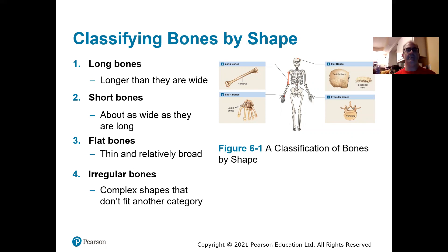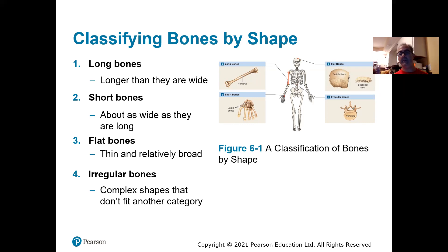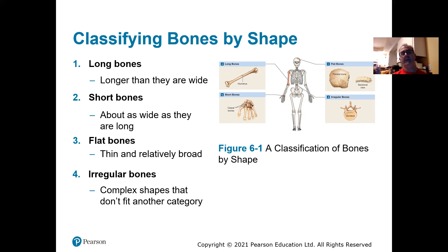Bones are classified by their shape. Long bones are longer than they are wide — the upper arm, upper leg, and even finger bones are long bones. Short bones are about as wide as they are long, nearly round — the bones of the wrist and ankles. Flat bones are thin and relatively broad, like the bones of the skull and sometimes the scapula. Irregular bones have a funny shape that doesn't fit any category; the vertebra is the classic example.